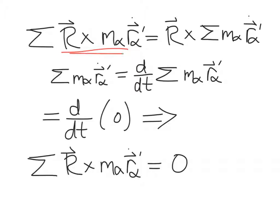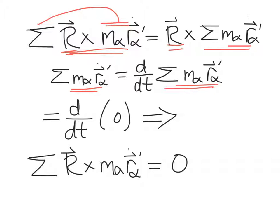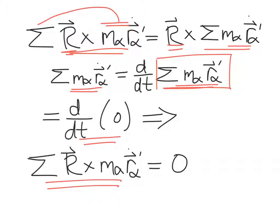For the second term, since capital R is independent of the sum, we can take it out. What remains is the time derivative of the sum over alpha of m_alpha times r_alpha-prime. This is asking where the center of mass is located relative to the center of mass — which is by definition zero. Therefore its time derivative is also zero, and the second term in the total angular momentum is just zero.